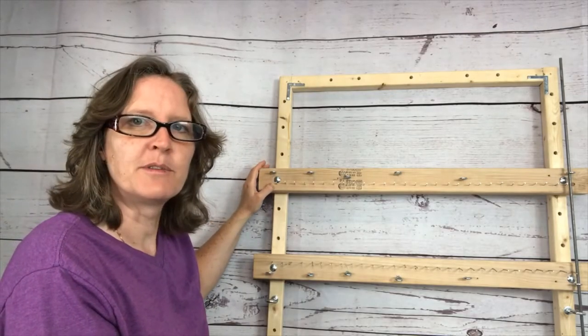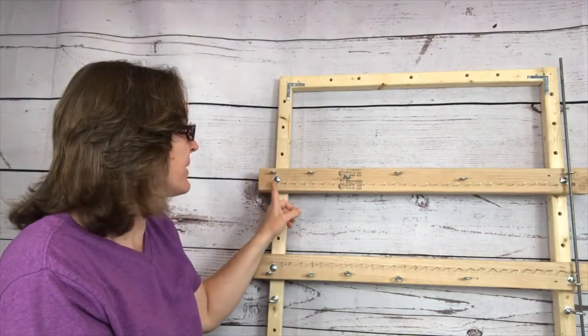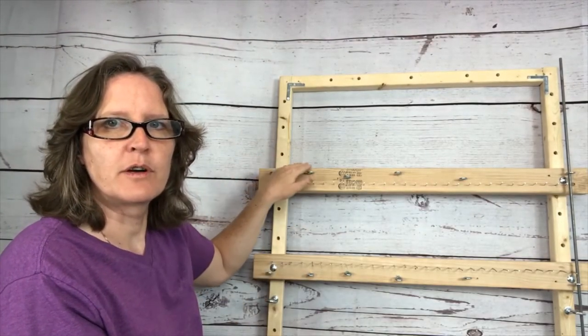For the cross beams I used two by threes because I wanted a little extra space. I wanted space for my nails, space for my bolt, and space for the hooks for all the different size projects that I was going to make.